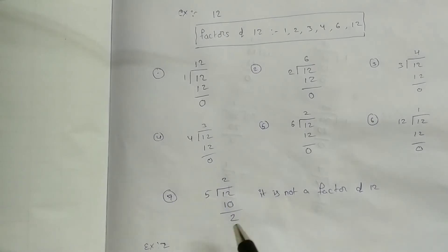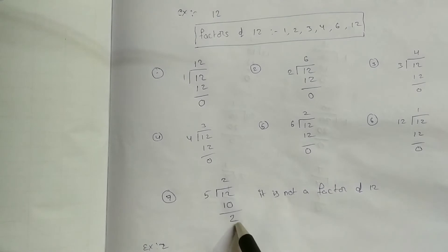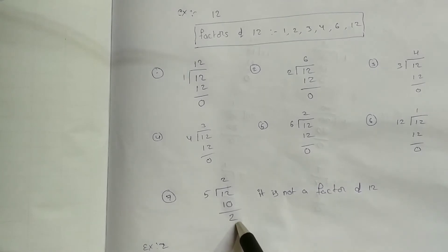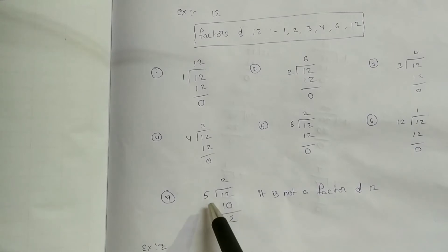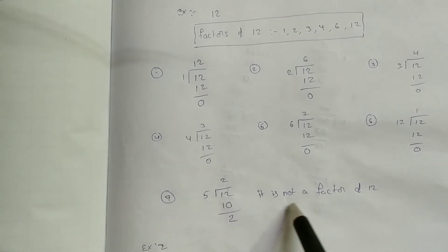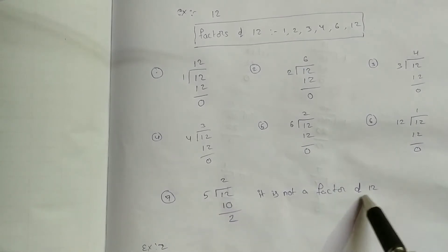But if the remainder is not zero, that number is not a factor. So, 5 is not a factor of 12.